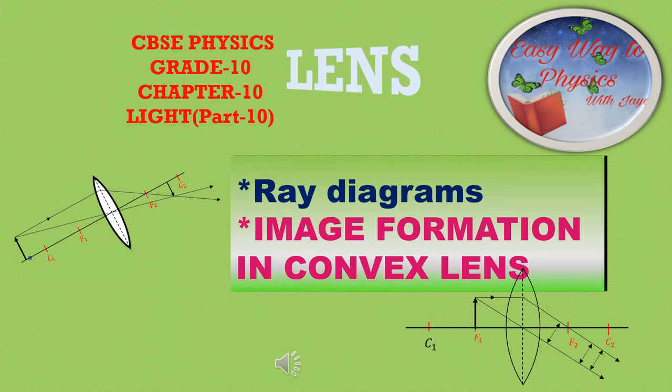Welcome to the channel Easy Way to Physics with Jaya. Today we will learn about ray diagrams — how images are formed in the case of a convex lens when the object is placed at different positions, and what the peculiarities of those images are.